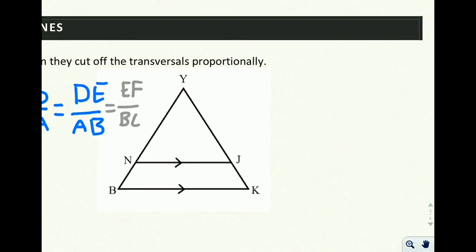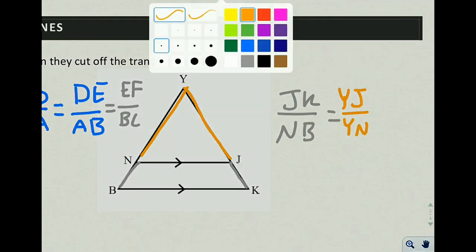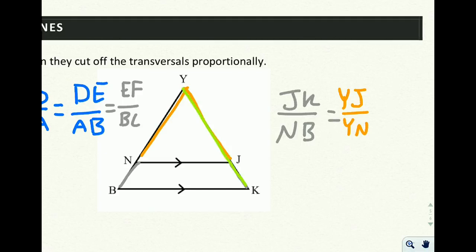Moving on to this next example, whenever you have a triangle, it's the same concept. So you could say, this piece over here, over this piece over here, JK over NB, is going to be proportional to, equal fraction to, YJ over YN. Which is also going to be proportional to the whole thing, YK over YB.